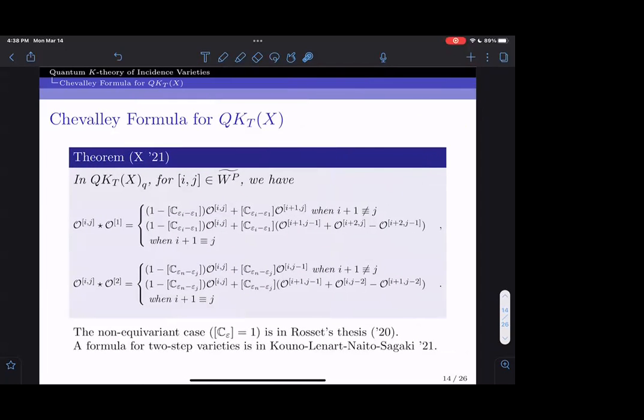We have this equivariant Chevalley formula which tells us how to multiply a Schubert class and a Schubert divisor class. Again, these indices live in W^p total, so the q parameters are implicit in the formula. The non-equivariant case was worked out independently in Rosset's thesis, and a formula for two-step flag varieties is in the second version of Kuno, Lenart, Naito, and Sagaki, which was posted on the archive a few days before my paper.